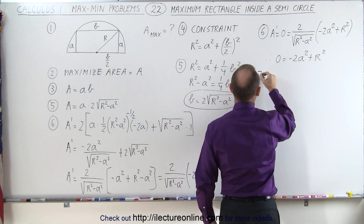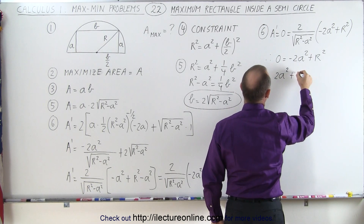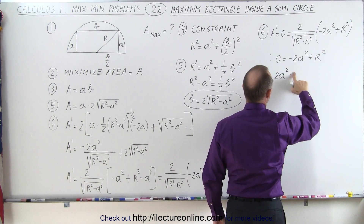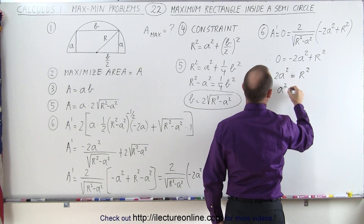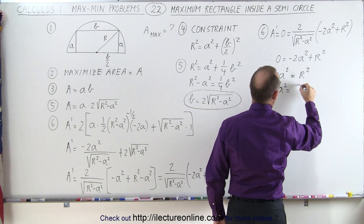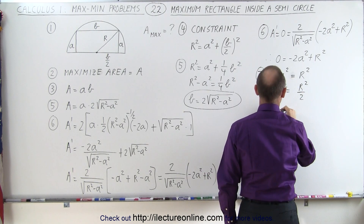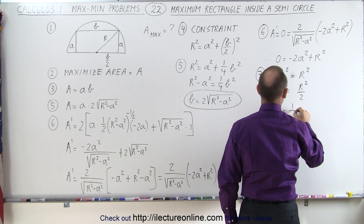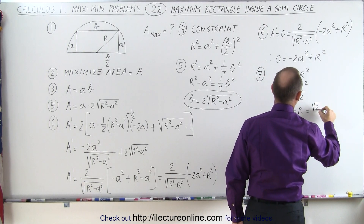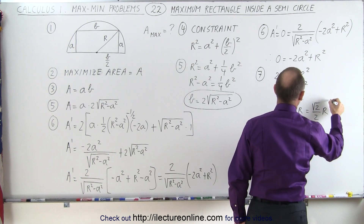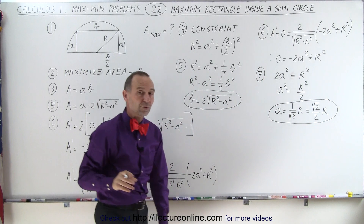Step seven: we solve for A. We have 2A squared equals R squared, so A squared equals R squared divided by 2. Taking the square root of both sides, A equals 1 over the square root of 2 times R, which can also be written as the square root of 2 over 2 times R. Now I have the value of A in terms of R.